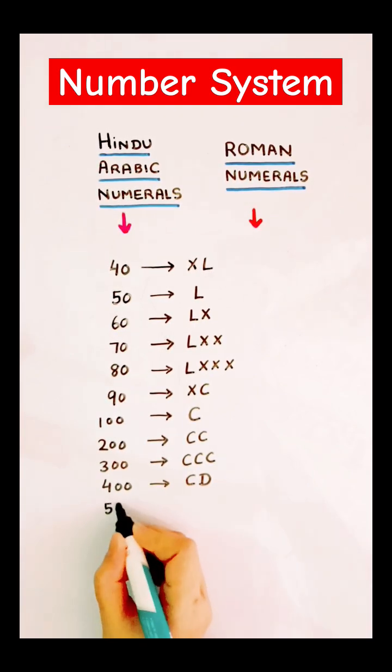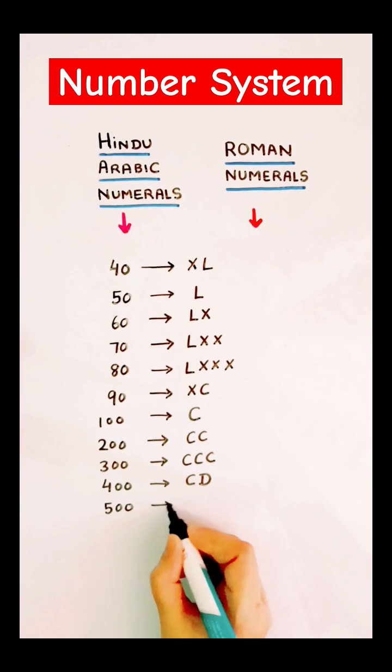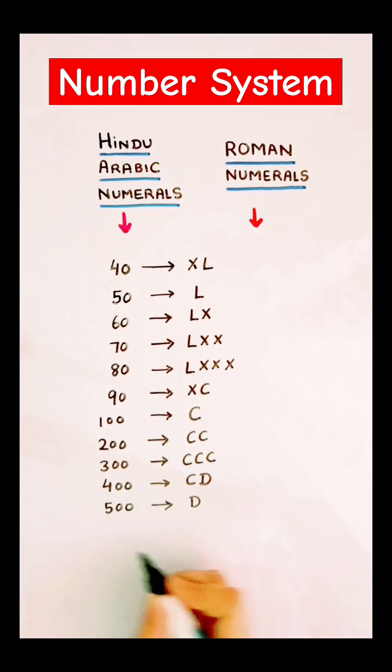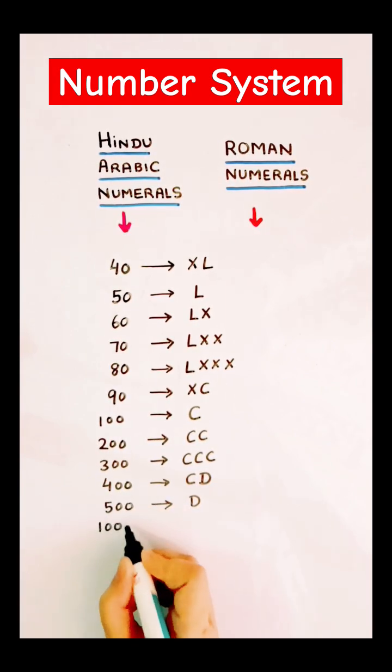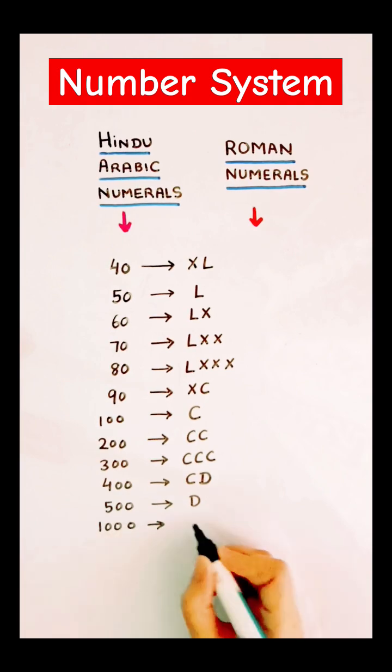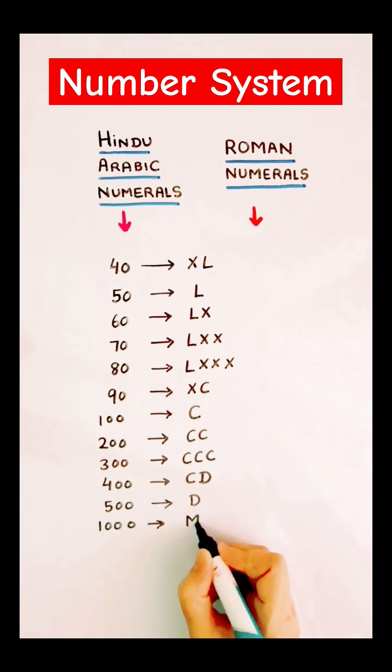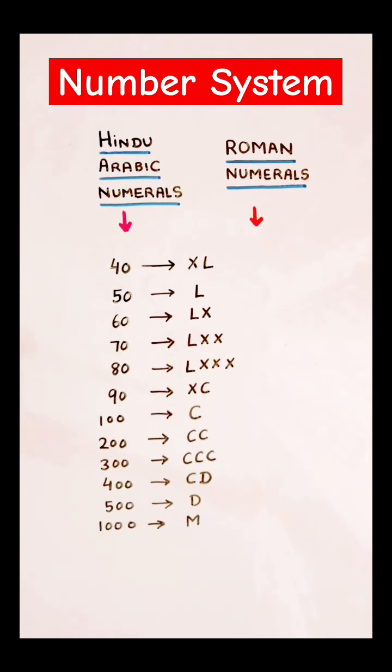Now comes 500, which is simply D. Next is 1000, which is denoted by capital letter M. Thank you.